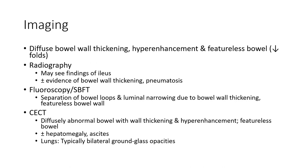Imaging findings. On fluoroscopy, separation of bowel loops and luminal narrowing due to bowel wall thickening produce a featureless bowel appearance. Contrast enhancement CT typically shows abnormal bowel with wall thickening and hyper-enhancement, producing a featureless bowel appearance. Radiographs may show findings of ileus plus or minus evidence of bowel wall thickening and pneumatosis.